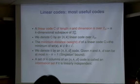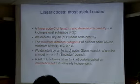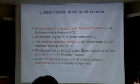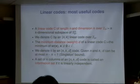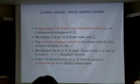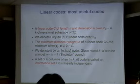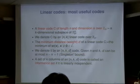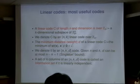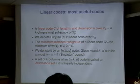A set of k columns is called an information set if it is linearly independent. Because it's an [n,k] code, there exist a set of k columns which has rank exactly k as well. This concept is very important in my talk — just remember that. If d is large, then it can correct many errors. How many errors can the code correct? t is about (d-1)/2. So if d is large, you can correct many errors.